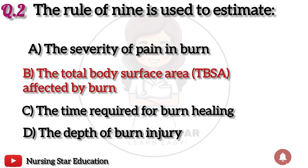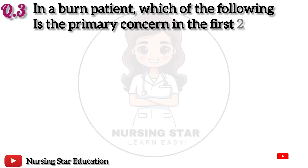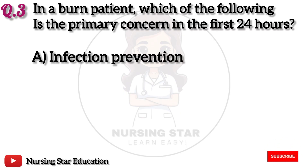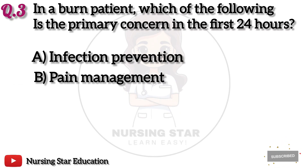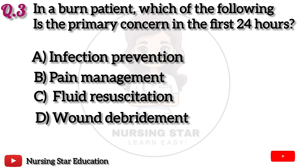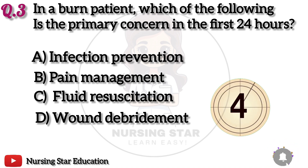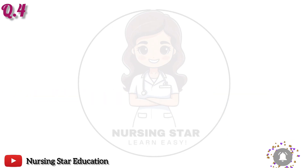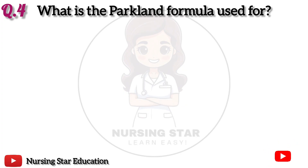Question 3: In a burn patient, which of the following is the primary concern in the first 24 hours? Option A: Infection prevention. B: Pain management. C: Fluid resuscitation. D: Wound debridement. The correct answer is C: Fluid resuscitation.